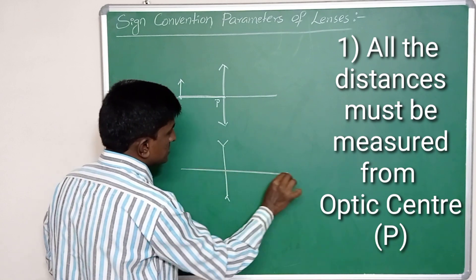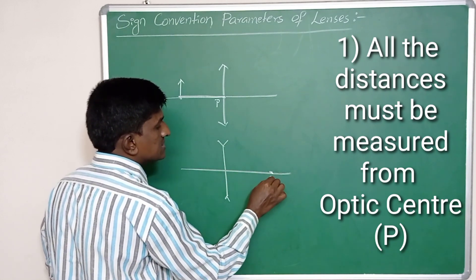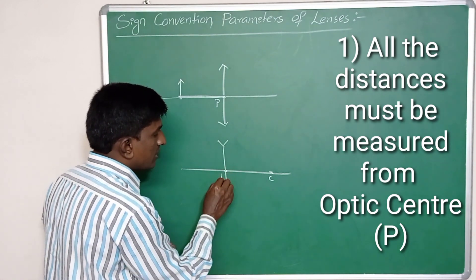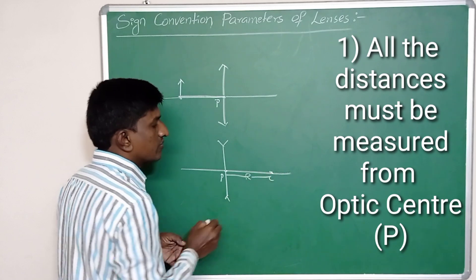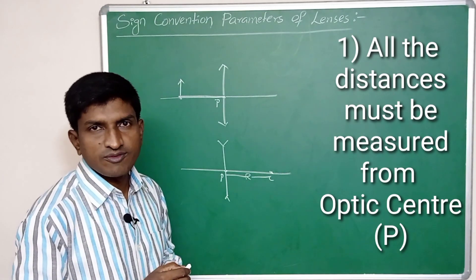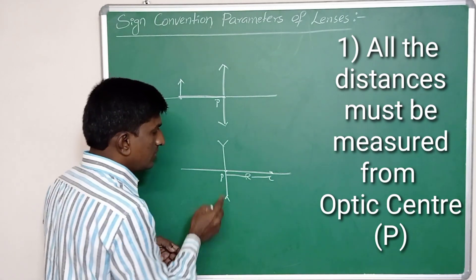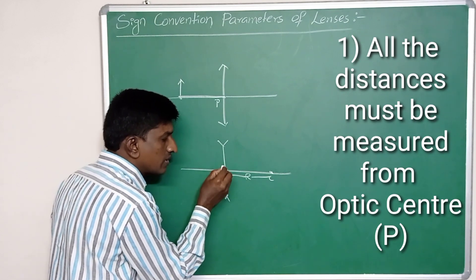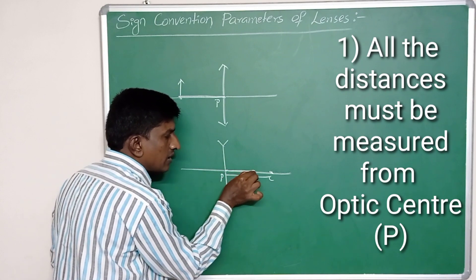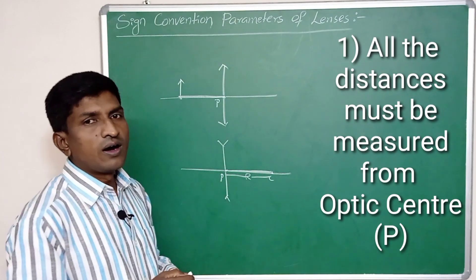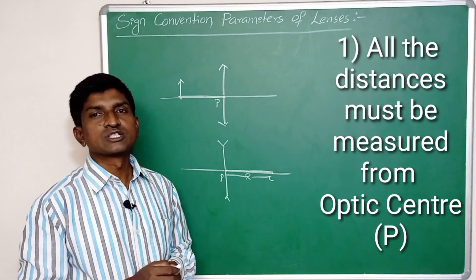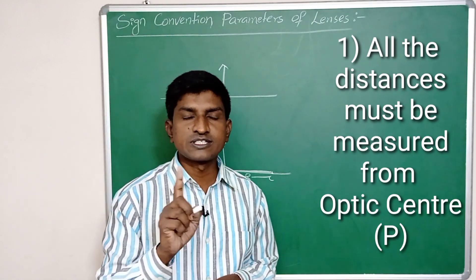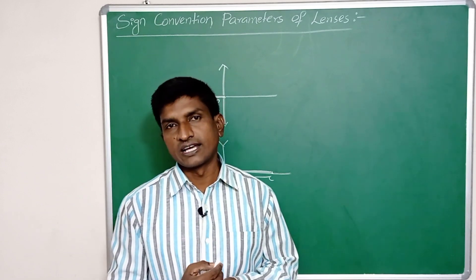In the case of a concave lens, if the center of curvature is here, then the distance between the optical center and the center of curvature is called the radius of curvature. To measure the radius of curvature, we start from the optical center P up to the center of curvature C. All distances must be measured from the optical center — that is the first sign convention.